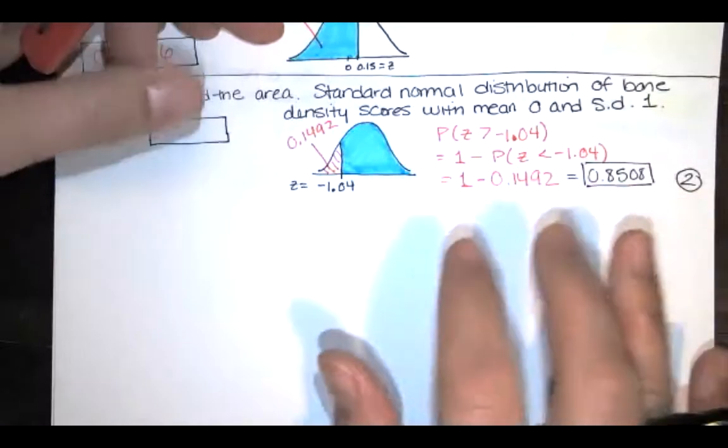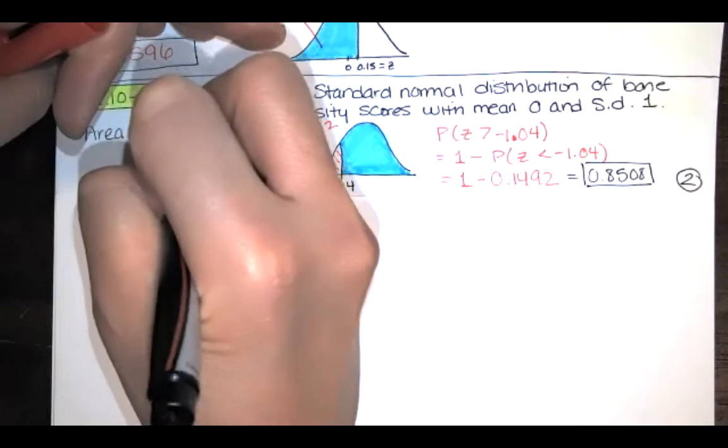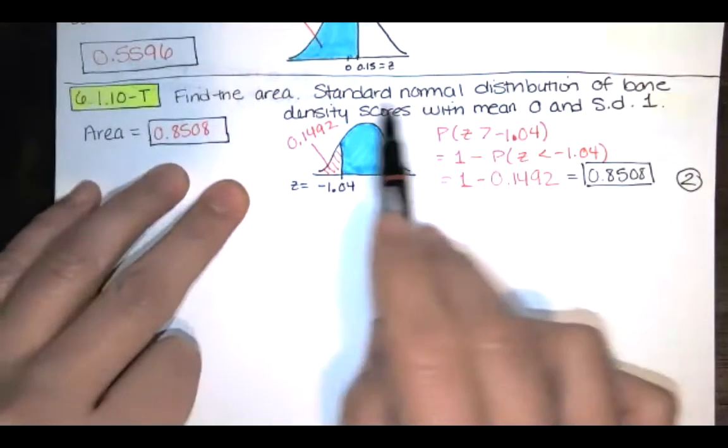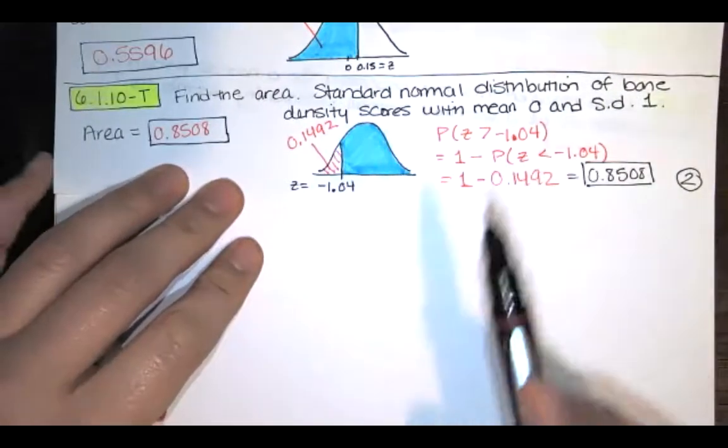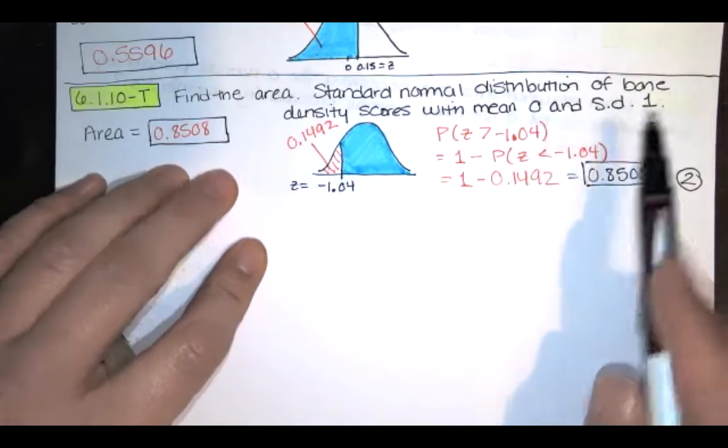Now remember areas, probabilities, and percentages they're all the same when we're talking about standard normal distributions. So what we're saying is if this standard normal distribution represents bone density scores which happen to be normally distributed with a mean of zero and a standard deviation of one,